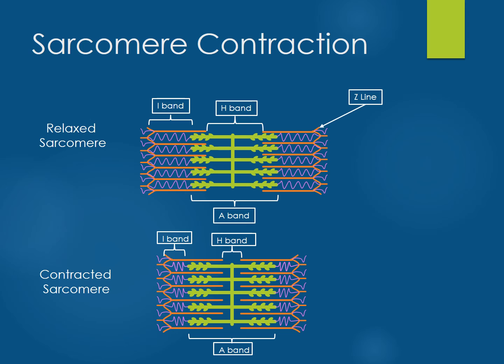You should be able to understand how the band lengths change as a sarcomere contracts. This can be best seen when you compare illustrations of both a relaxed and contracted sarcomere. When the filaments slide together in contraction, both the I-band and the H-band will decrease in length. However, the A-band will always remain the same length.